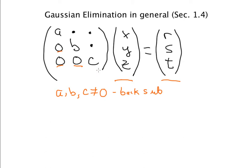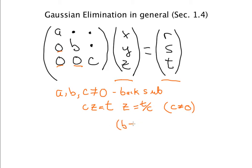The way back substitution works: the very last equation says c times z equals t, and it's extremely helpful to know that c is not equal to zero. At the next step, we're going to divide by b, so we need b not equal to zero. And similarly, a is not equal to zero.